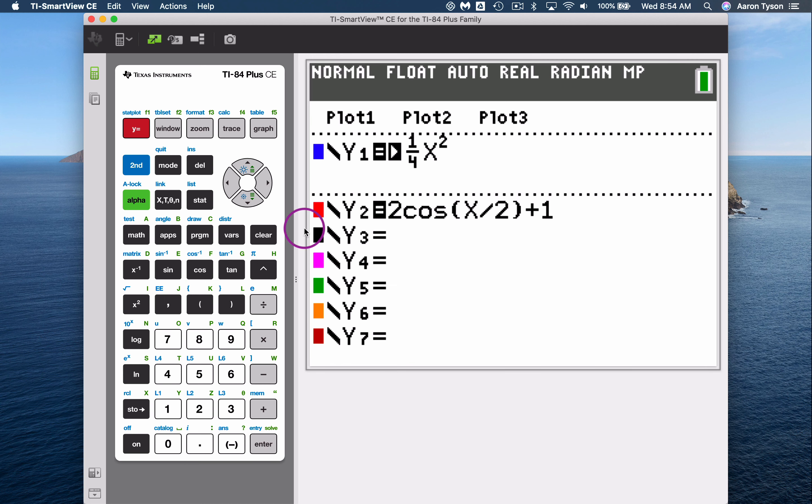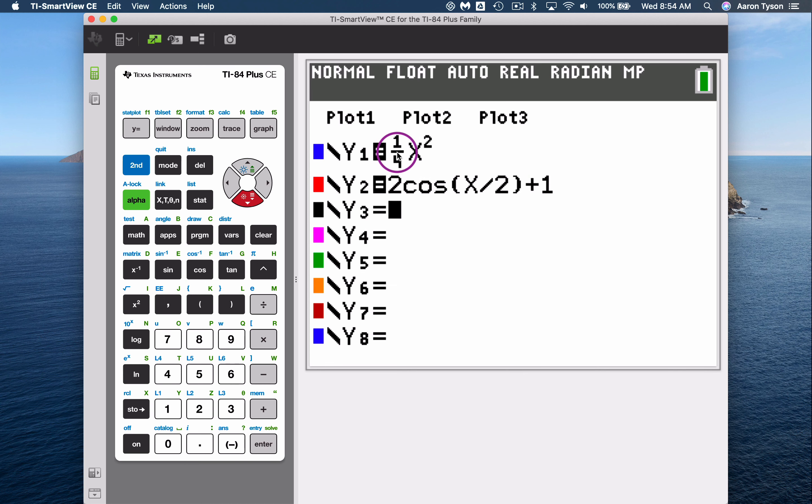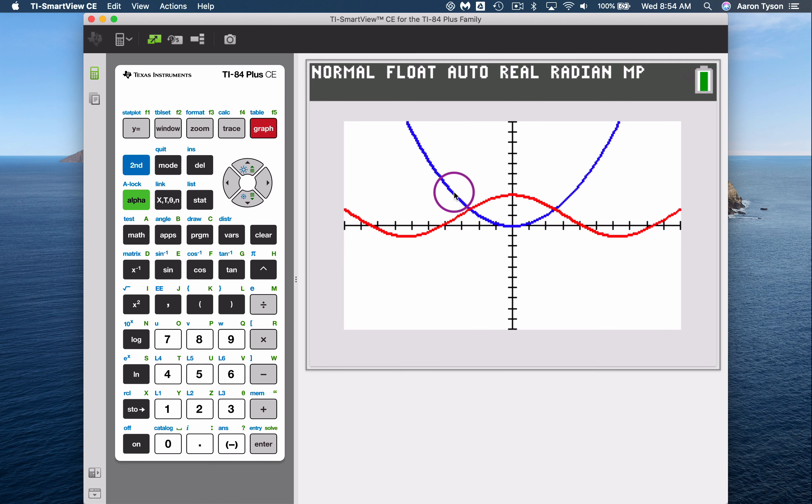The functions that I'm going to be calculating the point of intersection for are y equals 1 fourth x squared and y equals 2 cosine x over 2 plus 1. We can see our parabola graphed in blue and our cosine function graphed here in red.